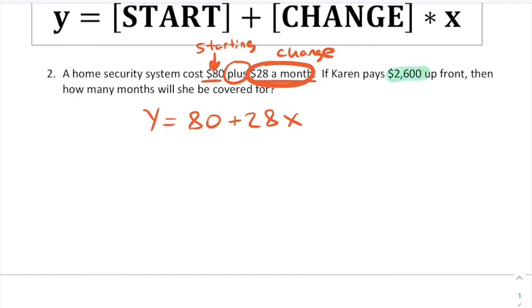Now, Karen pays $2,600 and we're asked how many months will she be covered for. X in this problem is going to represent the number of months since we're saying 28 a month. So the change happening in this problem is how many months there are. So X is going to represent months and Y is representing the total amount of money. So if we're told that Karen pays $2,600 up front, we're being told that that's a Y value. And if we want to know how many months it will take, we're looking for an X. So we're going to use this equation to solve the situation. $2,600 goes in for Y equals 80 plus 28, and we don't know how many months, so we just write X.